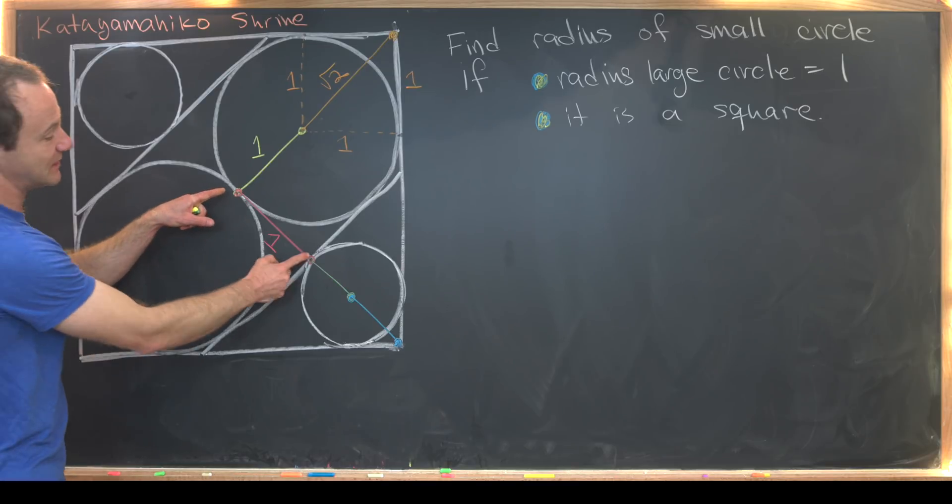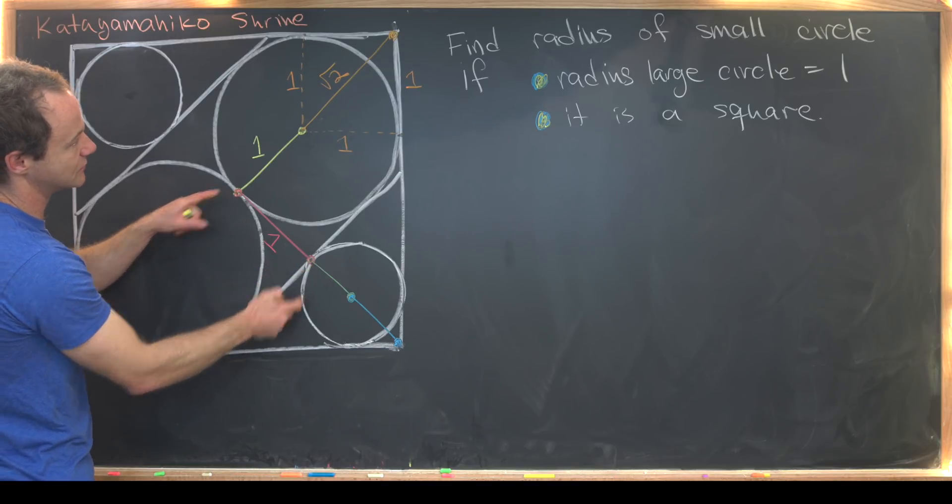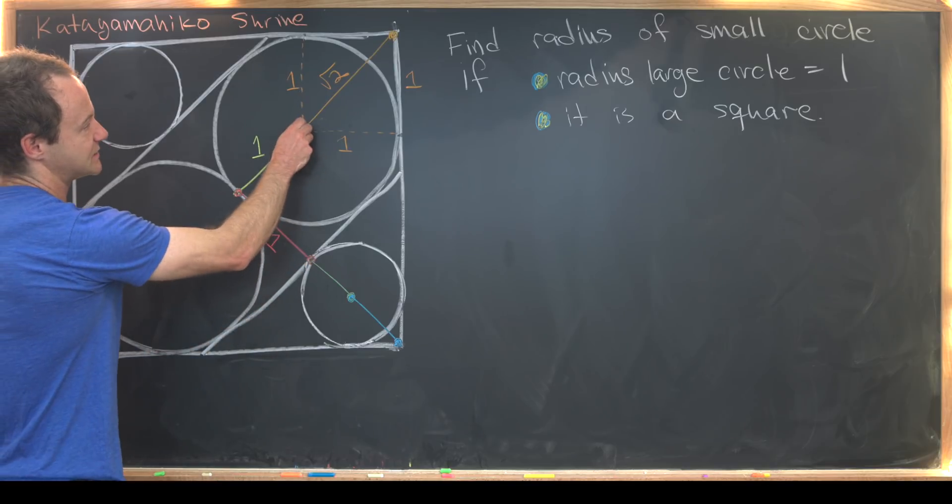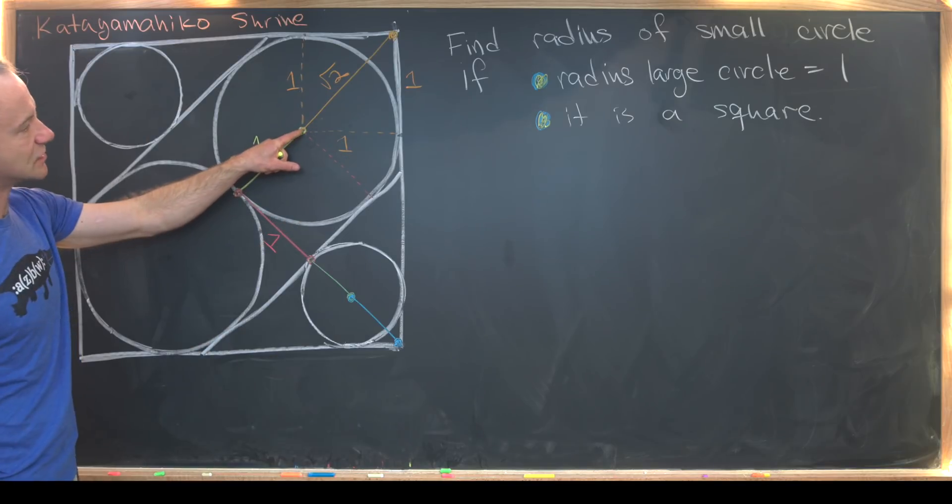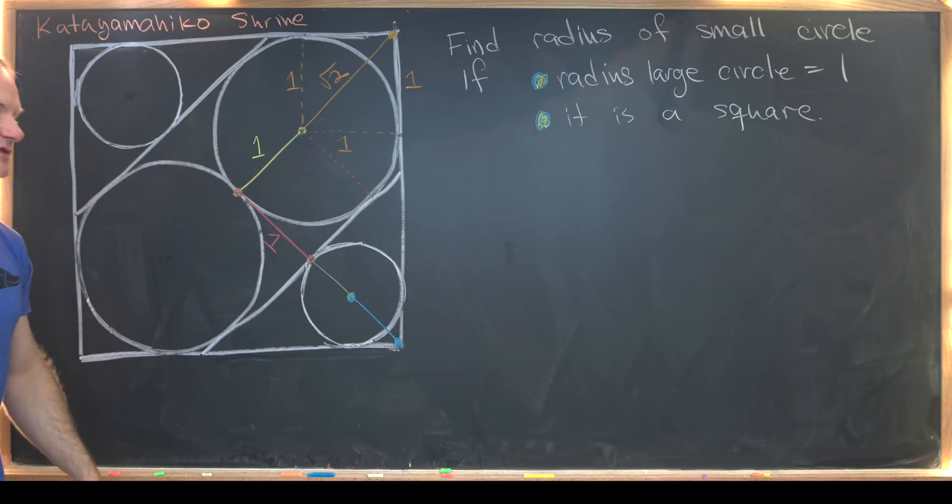Well, maybe it's a little bit easier if we transpose this red line up to here. Notice it goes from the center of the circle to the edge of the circle, so that means it's length, or radius, of the circle.